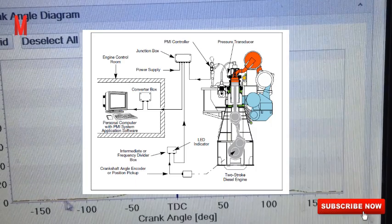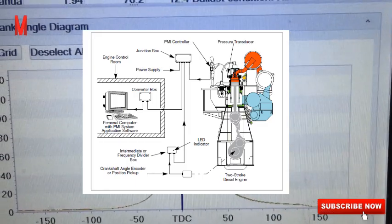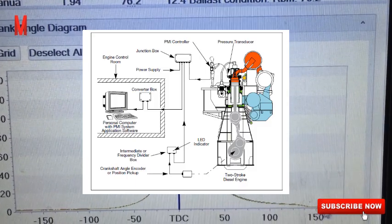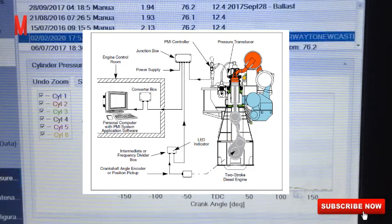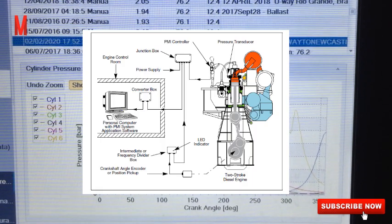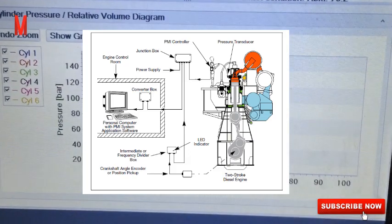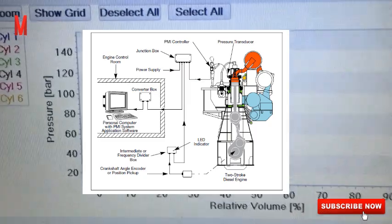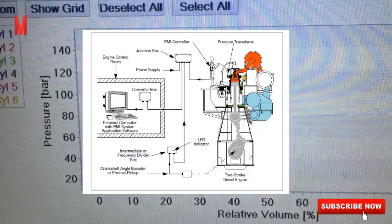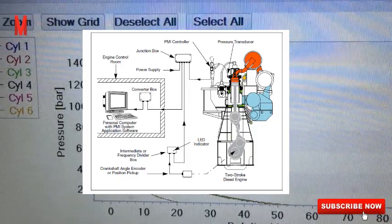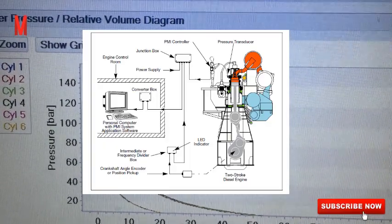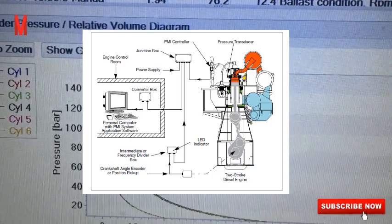Gone are the days when engineers used the indicator cards. What is new today is the engineer, when measuring the cylinder pressure, can install or mount the piezoelectric transducer or the pressure transducer into the indicator cock of each cylinder to be measured. The transducer is manually moved from one cylinder to another between each set of measurements.